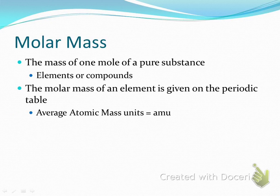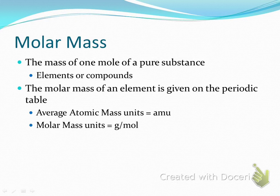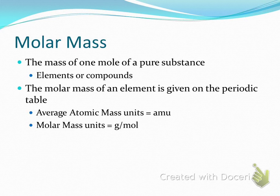When I measure average atomic mass, my units are AMU. When I measure molar mass, my units are grams per mole — meaning how many grams are in one mole of that substance. That's where the units grams per mole come from.